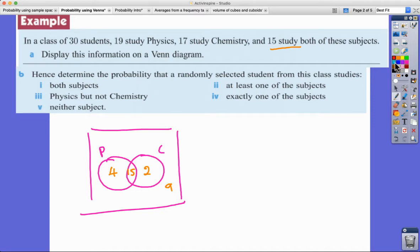So now I've got all my sections labeled up with how many people do each of those things. I can now do part B. Hence, determine the probability that a randomly selected student from this class studies both subjects. So that's going to be 15 out of a total of 30 which I know is one half, so it's a 50% chance that you do both subjects.